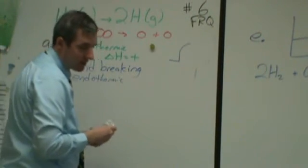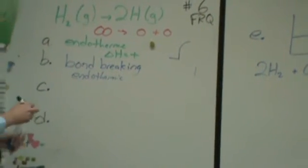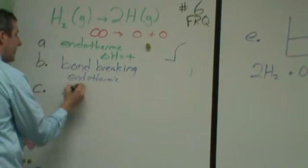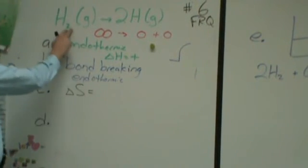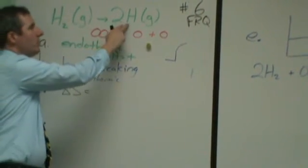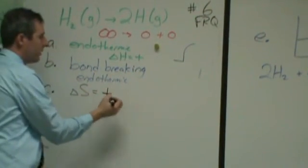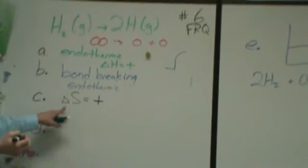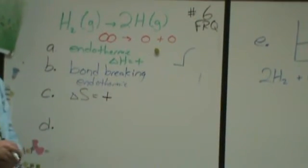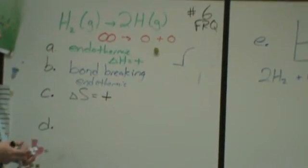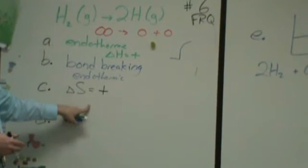So moving on from there, part C says what happens to entropy as this reaction goes. So for entropy, you really want to start by looking at how many gas molecules we have. You have one here made out of two atoms and two here made out of one atom each. The total number of gas molecules goes up. So delta S for this is going to be positive. That's the number one thing you want to look at. In this case, we're done with that. Delta S is going to go up.